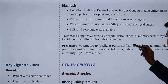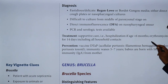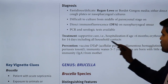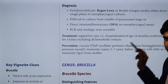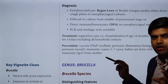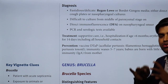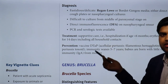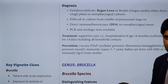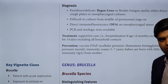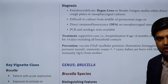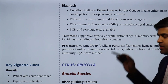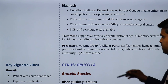Treatment is supportive care — hospitalization if age is less than 6 months. Erythromycin for 14 days, including all household contacts — that is very important. We need to treat with erythromycin not only the patient but all close contacts, because they all get infected and it is very transmissible. If adults do not develop disease, they will be colonizers and can spread in the community. So everybody needs to be treated for 14 days with erythromycin.